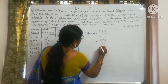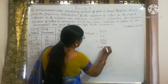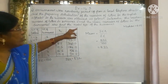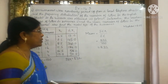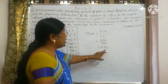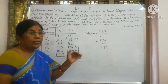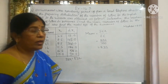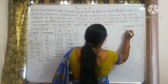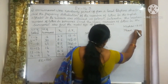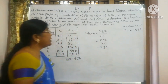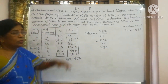We have the formula for the direct method: mean equals sigma fi xi divided by sigma fi. This equals 832 by 100, which we can write simply as 8.32. So the mean number of letters in the surnames is 8.32 — on average, 8.32 letters will be there in the surnames. Now let us find the mode also.